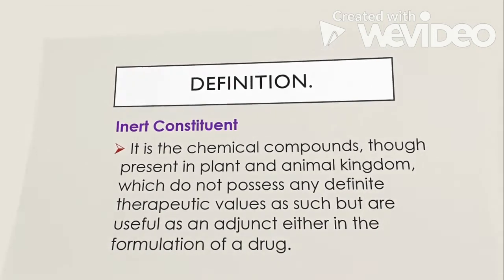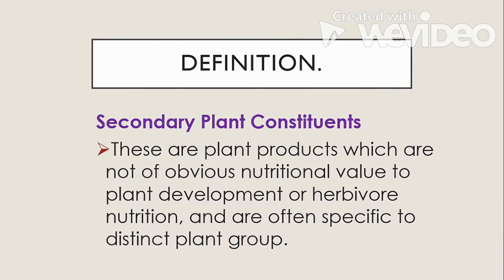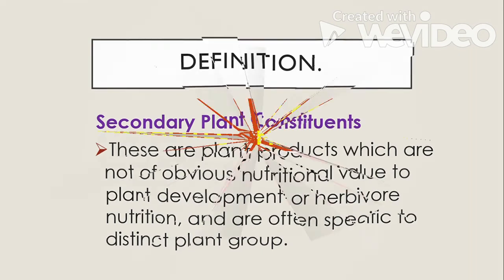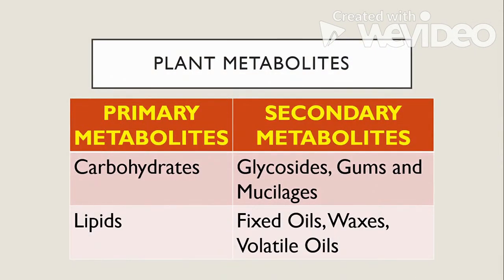Next is the secondary plant constituents. These are plant products which are not of obvious nutritional value to plant development or herbivore nutrition and are often specific to distinct plant groups. In other words, these are complex chemicals made by plants that are not essential to their life and can be used as protectors against predators and microbes. For primary metabolites, examples include carbohydrates and lipids. For secondary metabolites, we have glycosides, gums and mucilages, fixed oils, waxes, and volatile oils.